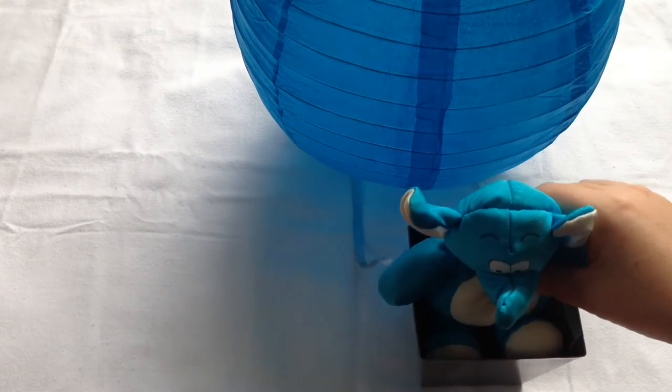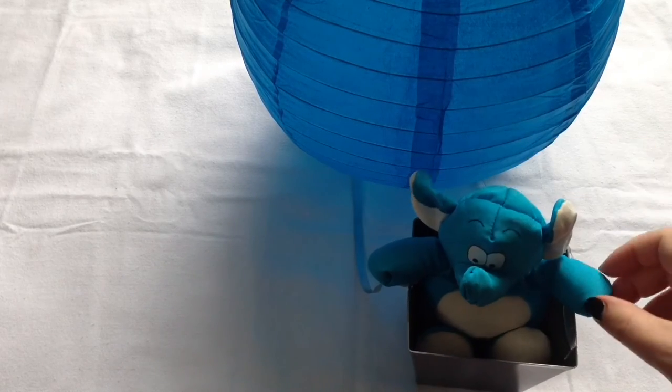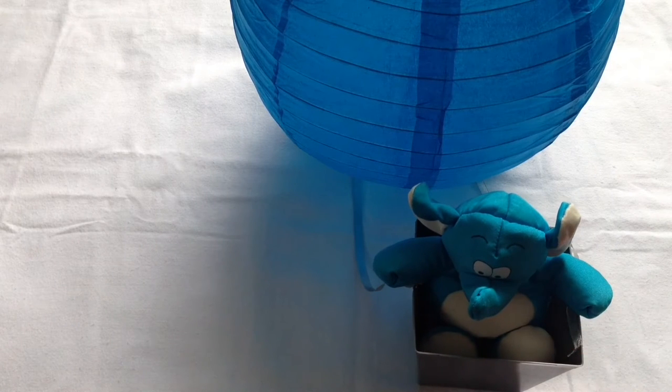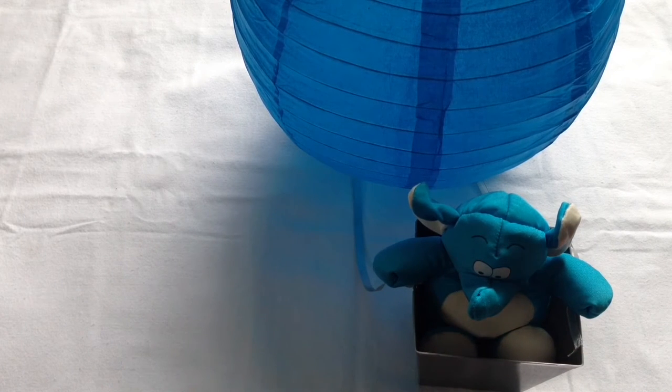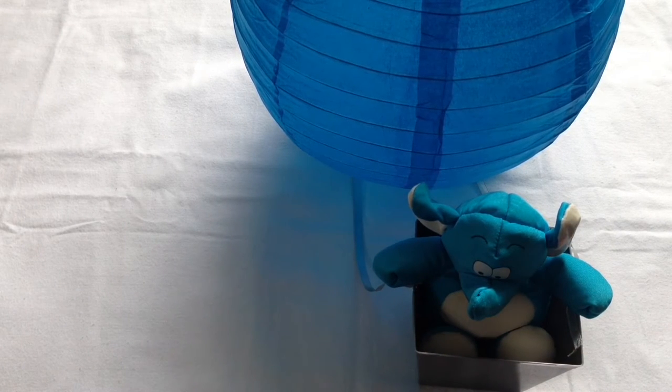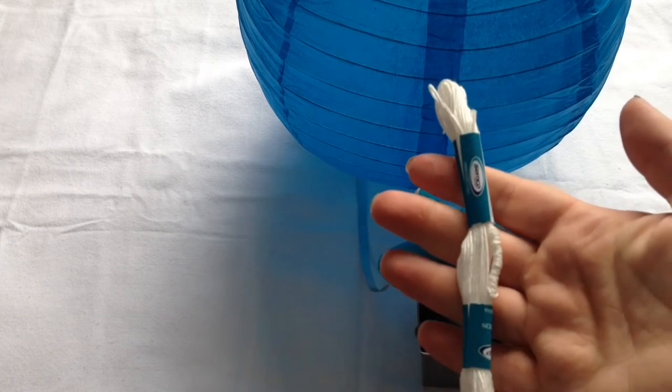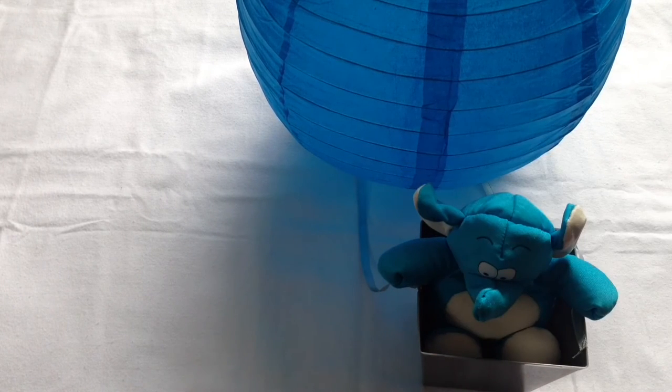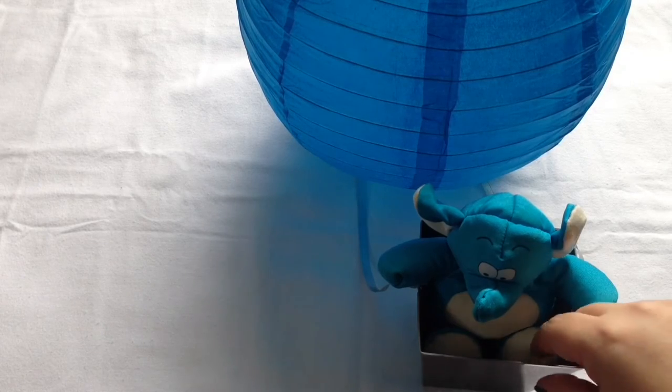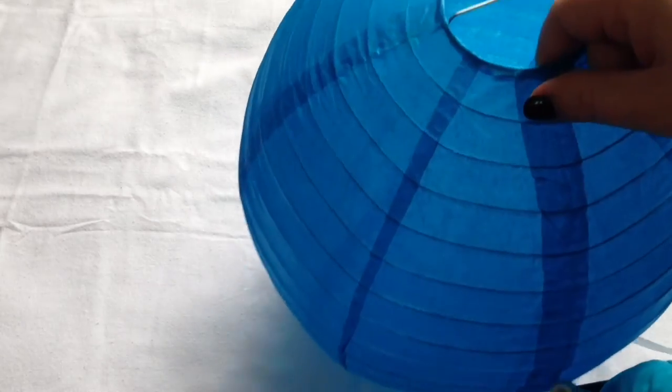So now you're just going to pop your teddy bear inside the box and we are almost done. You can trim off any edges from the ribbon that you tied, and you're going to get your string or thread and we are just going to attach it to the top of the paper lantern.